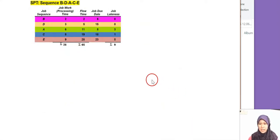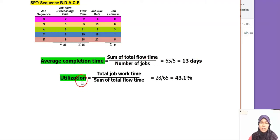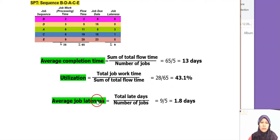Again, we need to do the calculation for the average completion time. We look at the sum of the total flow time, 65, divided by number of jobs, 5. So we get 13 days. Utilization, total of job time, it's 28, divided by sum of total flow time, 65. So we get 43.1%. And then average job lateness is the total lateness, 9 divided by 5 jobs. We get 1.8. So we will compare it with the FCFS.